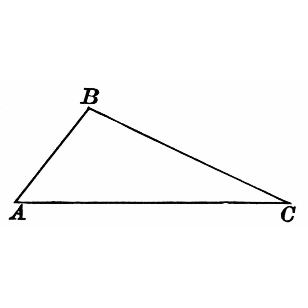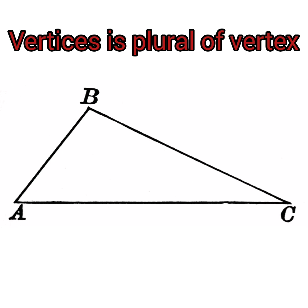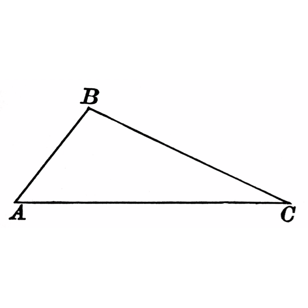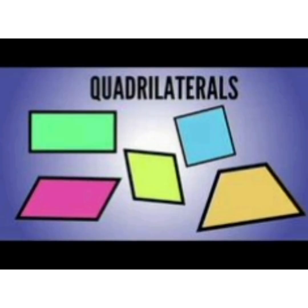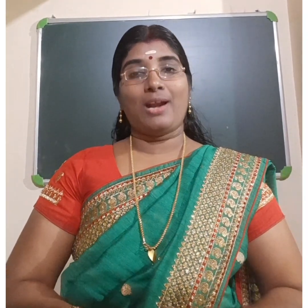A, B, and C are the vertices of this triangle. Vertices is the plural of vertex, and vertex is the point of intersection of two line segments. A polygon which is made up of four line segments is known as a quadrilateral.